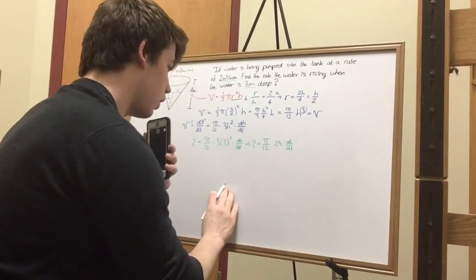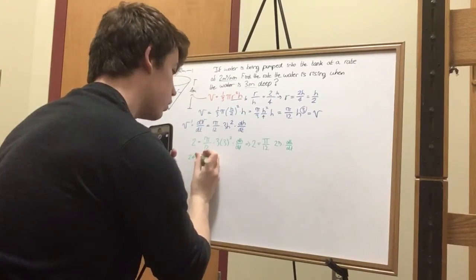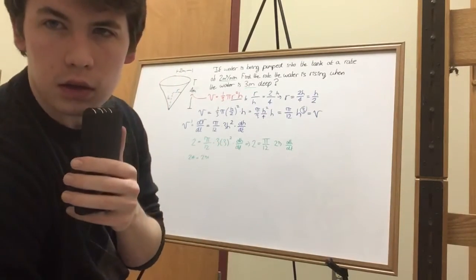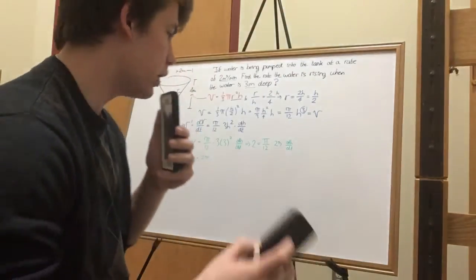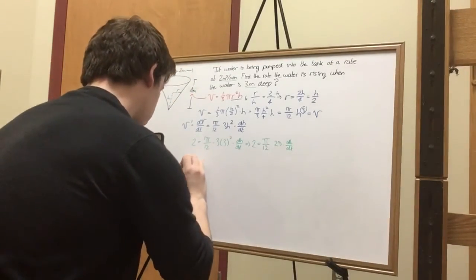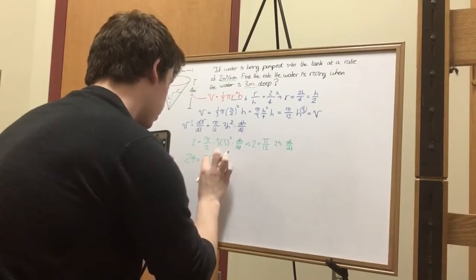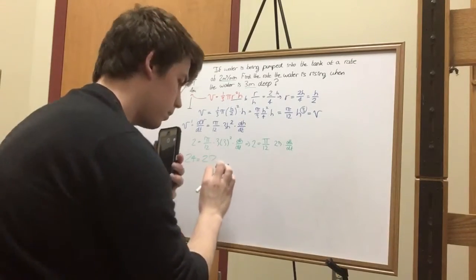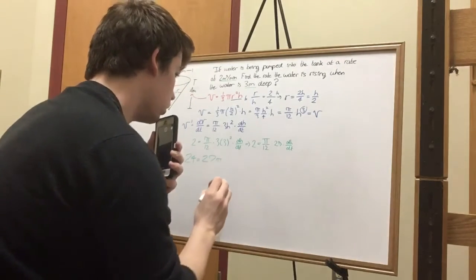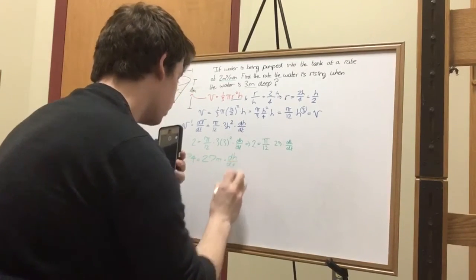What do we want to do? Yes, okay. Twenty-four equals twenty-seven. That's too small. That was what she said. Alright, twenty-seven pi. Twenty-seven. Four equals twenty-seven pi times the change in height over time.